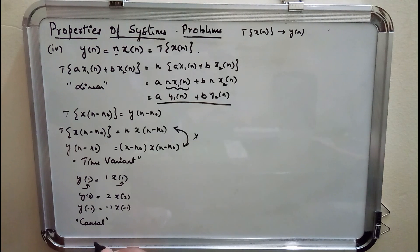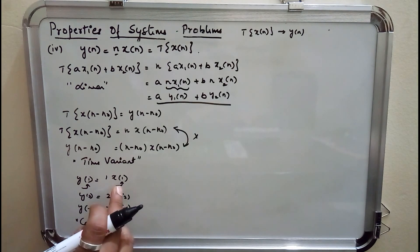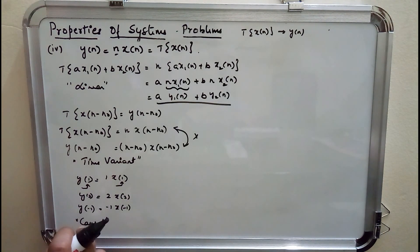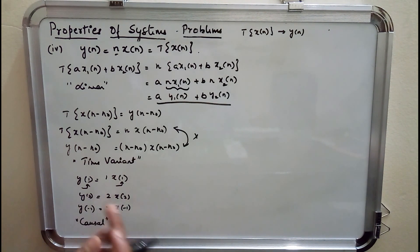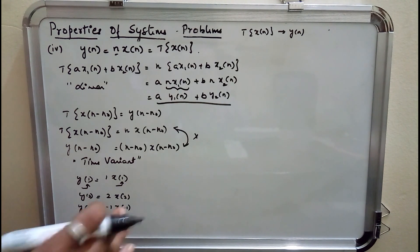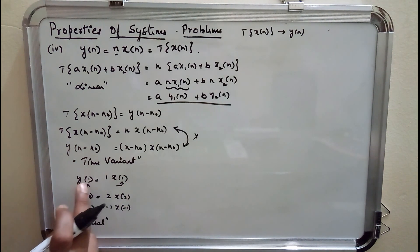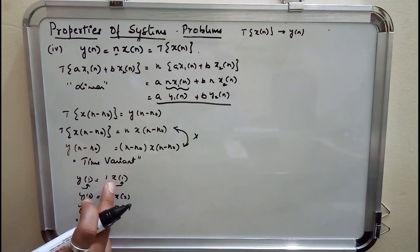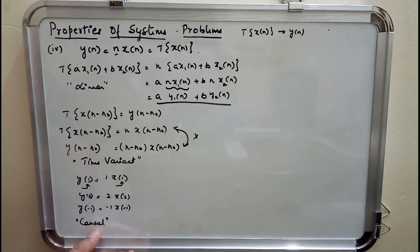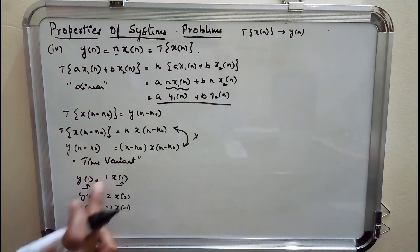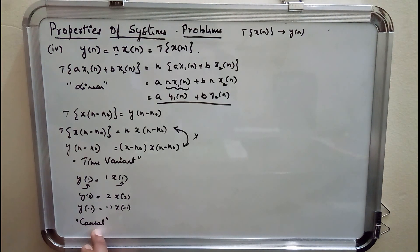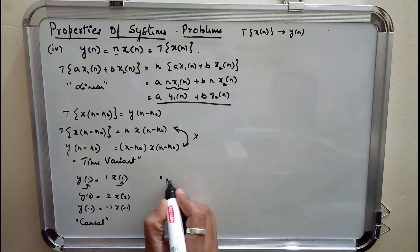The condition for a system to be non-causal is if output at one instant depends upon the input at a future instant — that is not the case here, so the system is causal. For memory: a system is said to have memory if output at one instant depends upon input at a past or future instant, but not the present instant. Here, output at one instant depends upon input at the same instant, so the system is memoryless.